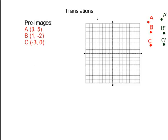Let's start by plotting the pre-image points. Point A is (3,5), and that goes in the first quadrant right about there. Point B is at (1, -2). That's going to be in the fourth quadrant. Point C, (-3, 0), ends up smack dab on the x-axis.